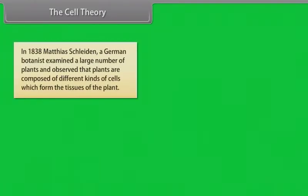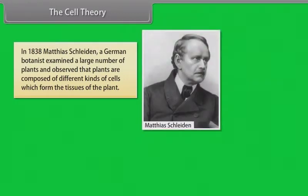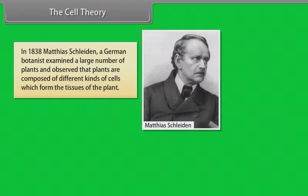In 1838, Matthias Schleiden, a German botanist, examined a large number of plants and observed that plants are composed of different kinds of cells which form the tissues of the plant.